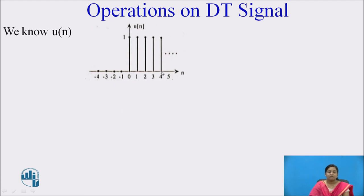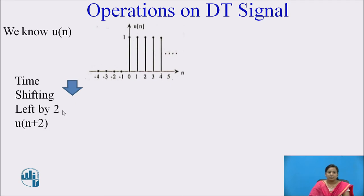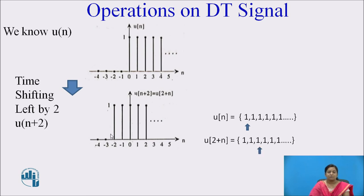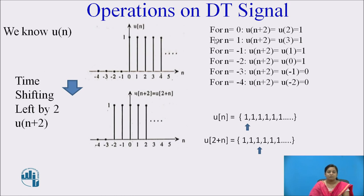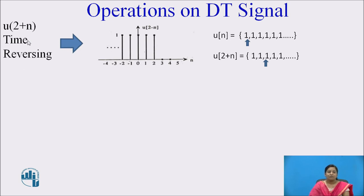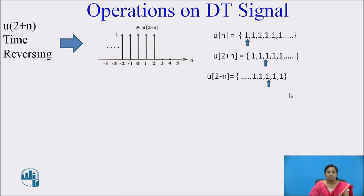We know this u(n) signal. To get u(n + 2), we shift this signal towards the left side by 2 units. This is the sequential representation of the original signal u(n). When we shift left by 2 units, the origin comes at the new position. In the second step, to get u(2 - n), we apply the time reversing property — fold this signal about n = 0 and take the reflection. This gives us u(2 - n) in sequential form.